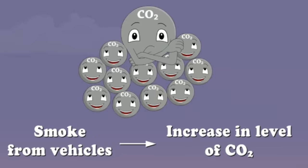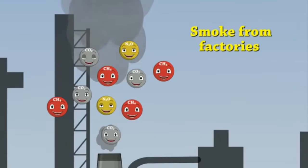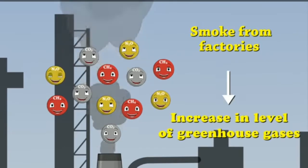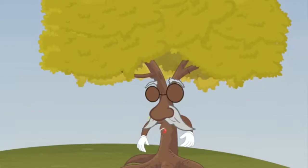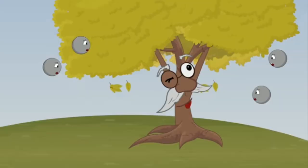We are using a lot of fossil fuels from which carbon dioxide is being released. We are running many polluting factories from which methane, nitrous oxide, and carbon dioxide gases come out. This means the level of greenhouse gases is increasing. If the greenhouse gas layer grows bigger, what will happen?